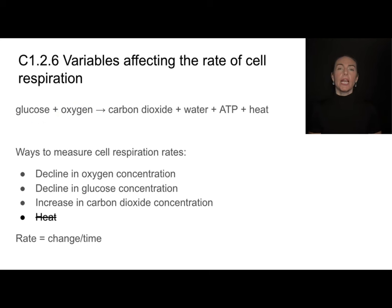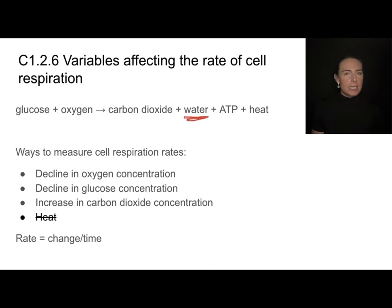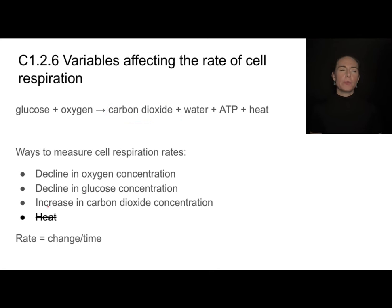We could also use a carbon dioxide sensor or even pH to measure the rate of increase in carbon dioxide concentration. Water and ATP are tough to measure. It's tempting to measure heat, but heat is not a reliable factor because temperature and pressure inside a chamber are closely related — creating more pressure can affect temperature. So I would stay away from choosing heat, but there are a lot of other things you could pick to investigate.